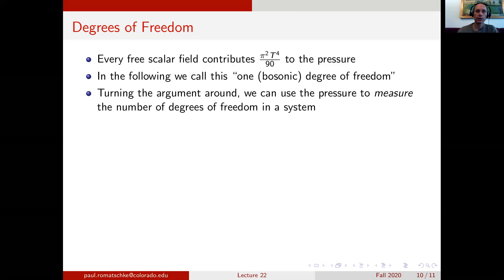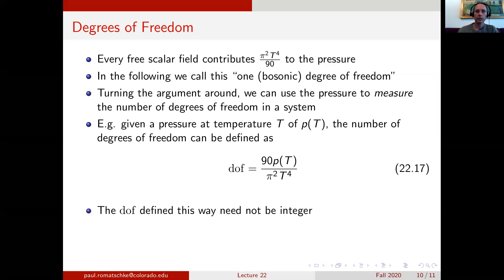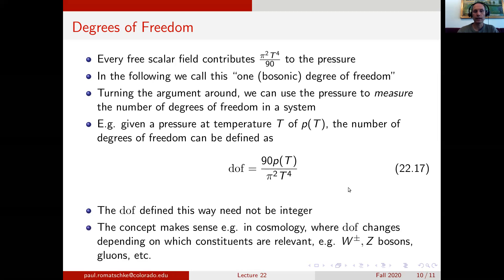Turning the argument around, we can use the expression for the pressure to measure the number of degrees of freedom of a system. Specifically, if we are given a pressure P of T at some temperature T, we can define the number of degrees of freedom DOF as the pressure times 90 divided by pi squared T to the fourth. The pressure could be a function that is not an integer when divided by this factor, so degrees of freedom here does not have to be an integer. It is an effective number of degrees of freedom, and this concept makes sense in various contexts in physics.